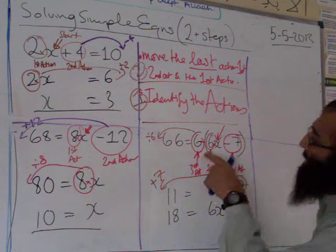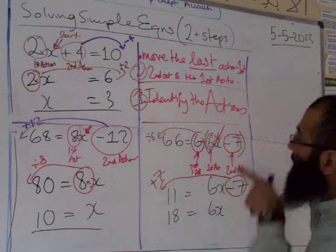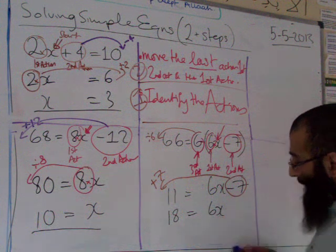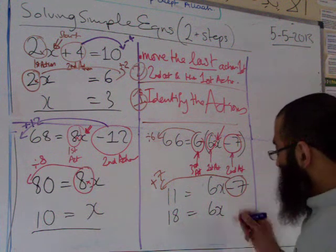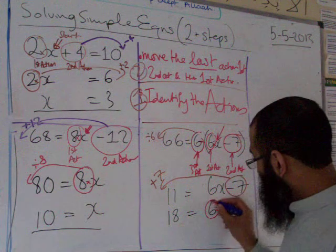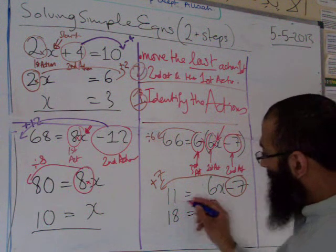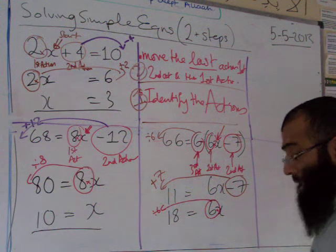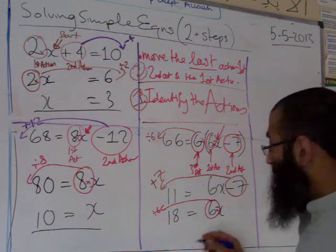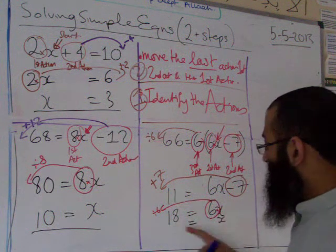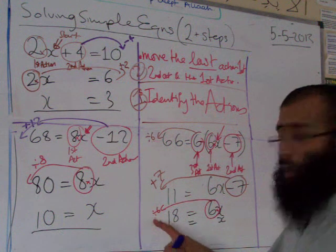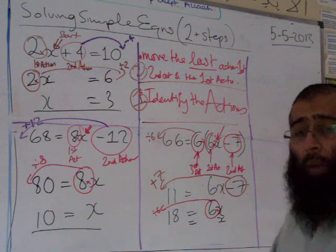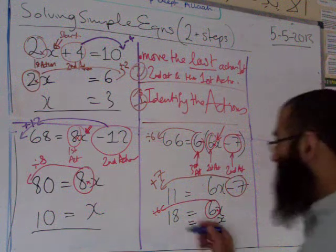We've dealt with times by six on the outside and minus seven. What's left is times by six from the first action. Opposite of times by six is divide by six. 18 divided by 6 equals 3. So x equals 3.